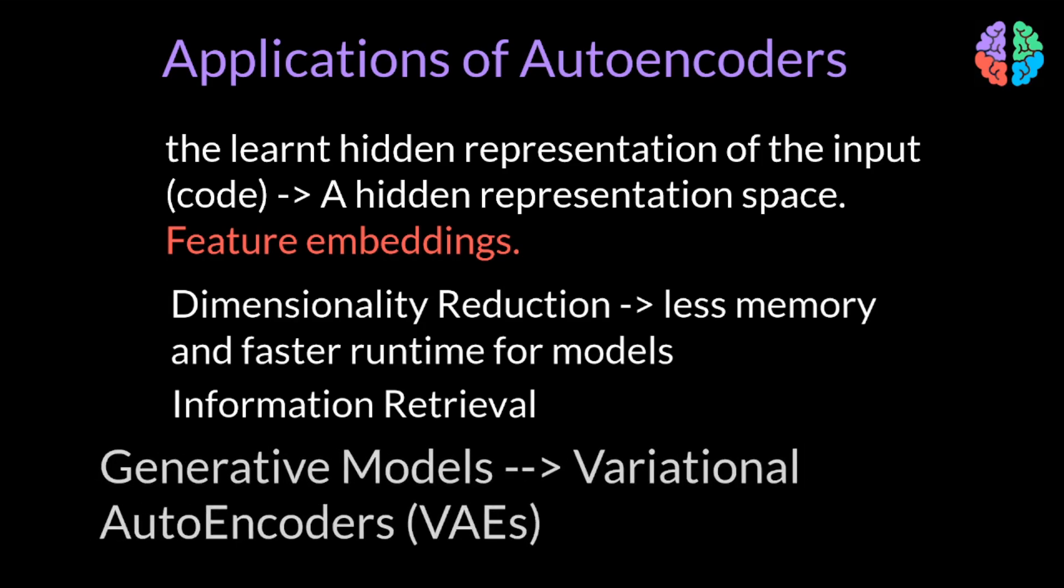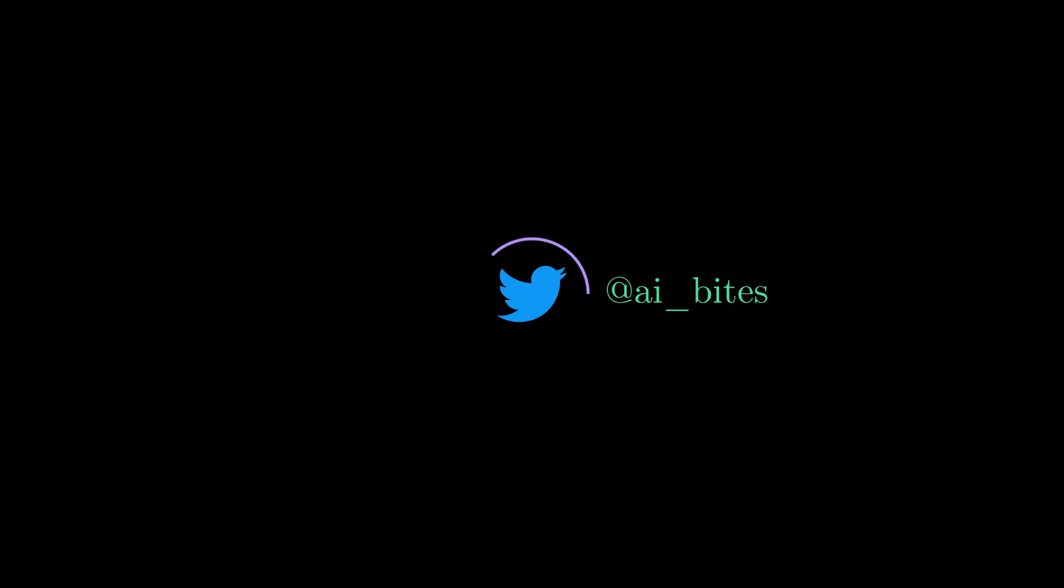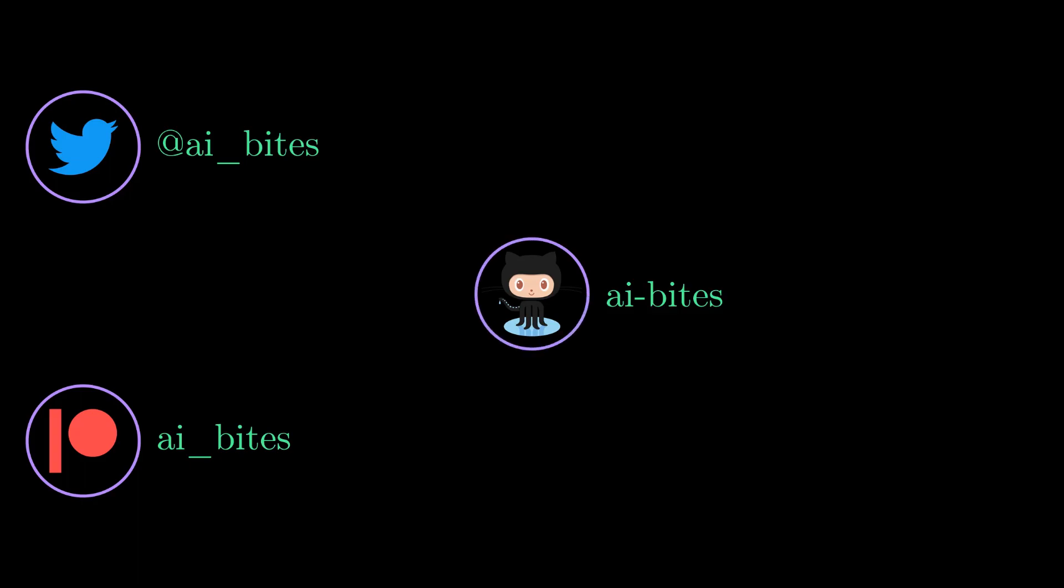The last but exciting application of autoencoders is generation of data. And the type of autoencoder used for generative modeling is called variational autoencoders. I will go through variational autoencoders in my next video, so please stay tuned, and I will see you in my next video. Take care, bye!